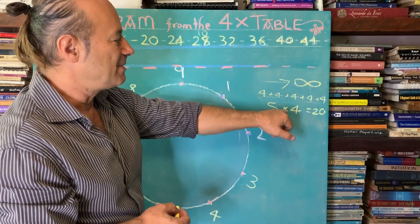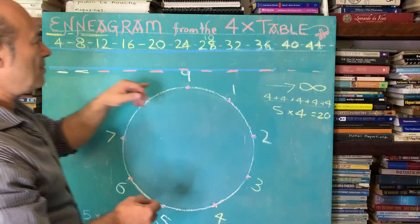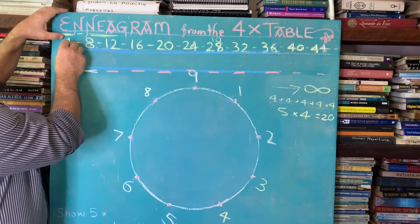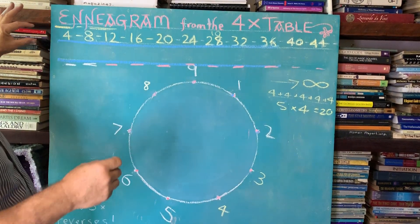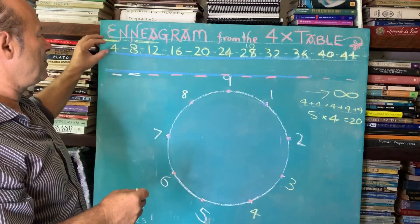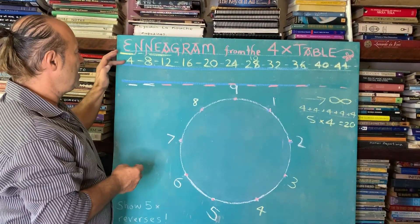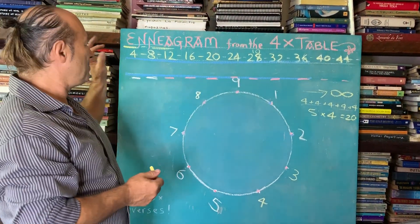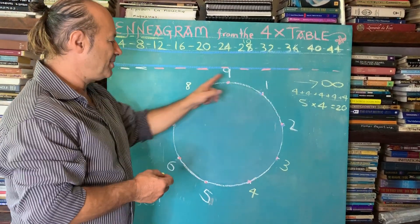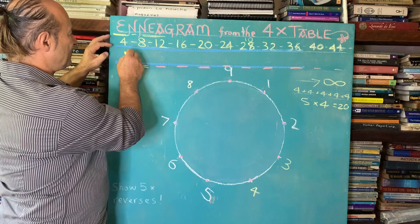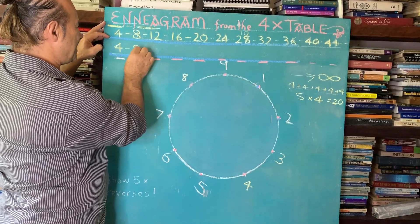Multiplication is another form of addition — it's multiple addition. We're going to look at the four times table, but we want to find what we call symmetry or repeatability. To do that, we're going to keep subtracting the number nine. We're going to plug all of these numbers into what we call the nine-point circle, which is saying we know that four is a four and eight is an eight.